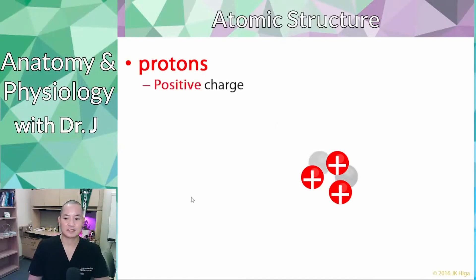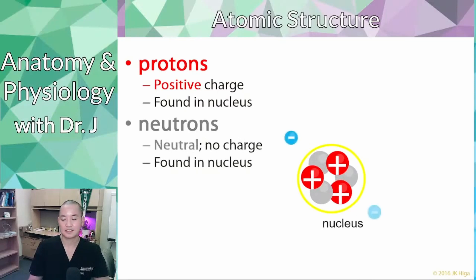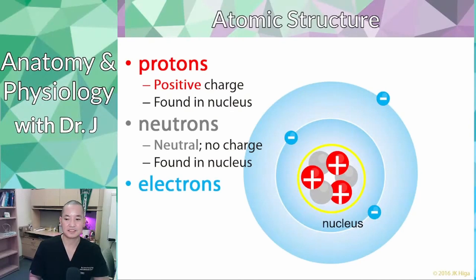So protons have a positive charge and are found in the nucleus along with neutrons. So this entire structure together, when you have protons and neutrons forming a central structure, this is called the nucleus. Now these electrons are in those electron shells and clouds that surround the nucleus, and these have a negative charge.